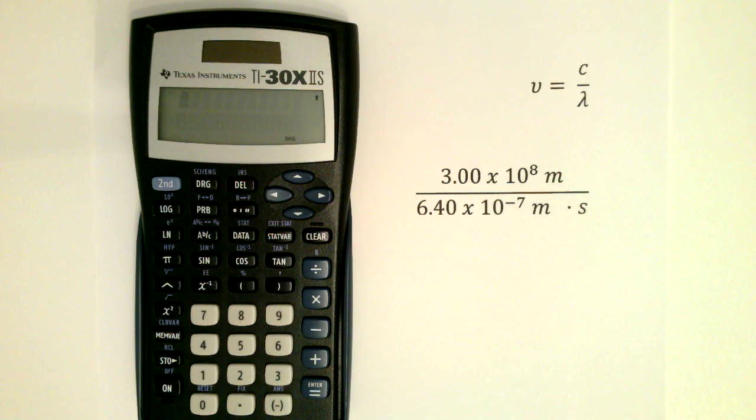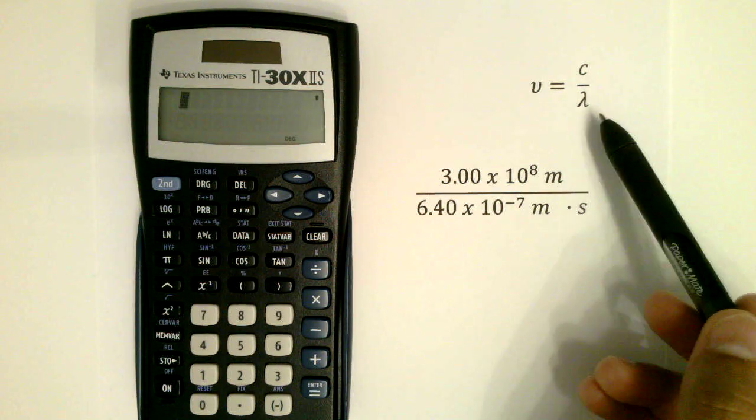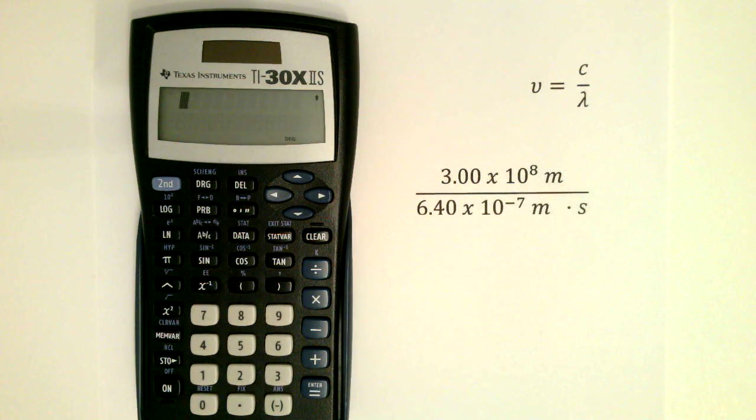Let's learn how to use the exponential function in a scientific calculator by solving for the frequency of light. In this example, c is the speed of light, and lambda is the wavelength of radiation.